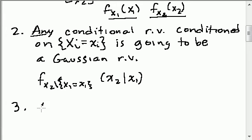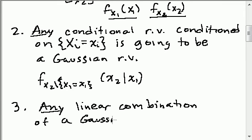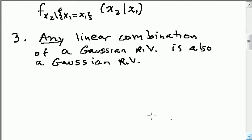The third property is that any linear combination of a Gaussian random vector is also a Gaussian random vector. For example, if I say y equals x1 plus x2, that's a linear combination — I've added two things together — and the PDF of y is going to be Gaussian.